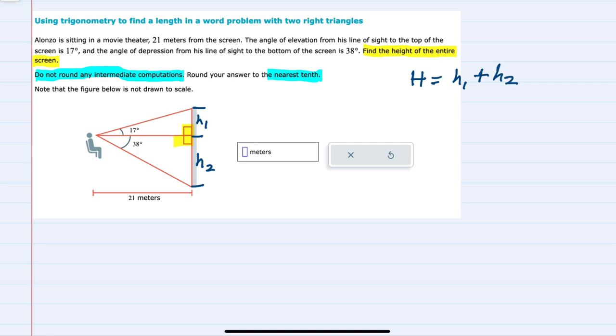One more thing before we start looking at our trigonometric ratios here. Since this distance is 21 meters, I'm going to label that here. This shared side is also 21 meters.